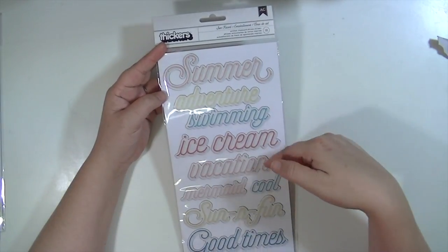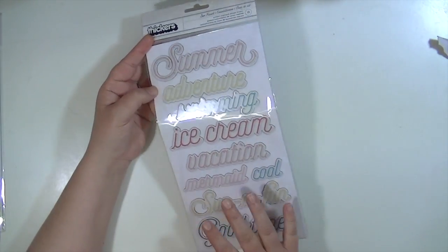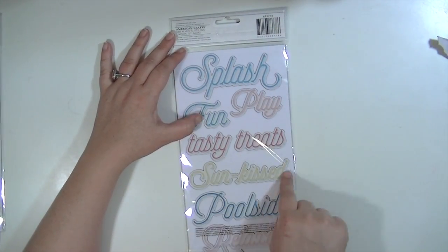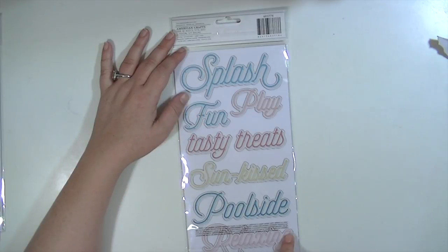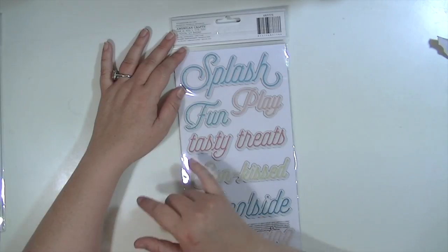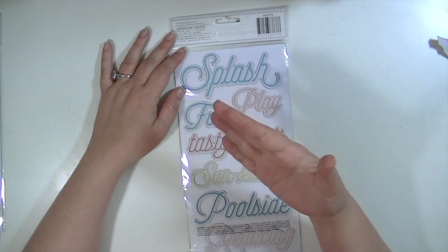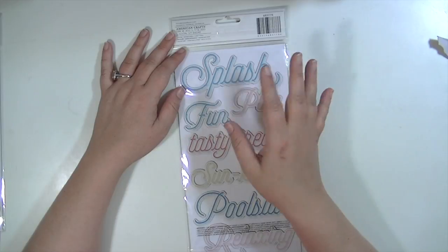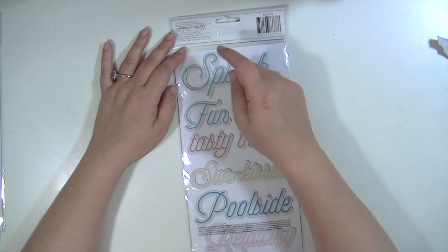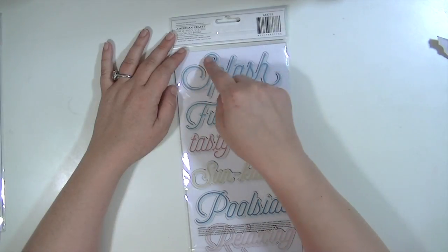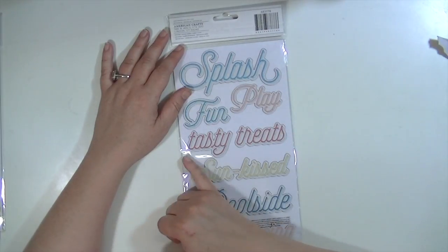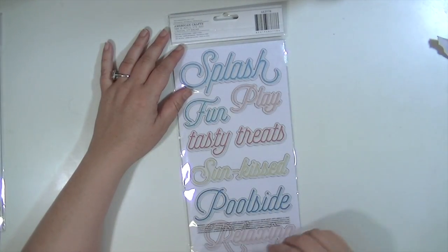And then you get a whole other side. Splash, Fun, Play, Tasty Treat, Sun Kissed, Poolside, and Relaxing. I like that some of these are uppercase letters and some start with lowercase because you could, if you're the kind of person who likes to do things grammatically correct and have your first letter be uppercase, you could totally do that. Or if you're like me and don't care or tried everything in lowercase, then you could use these. You get the whole pack and there are 18 different phrases.